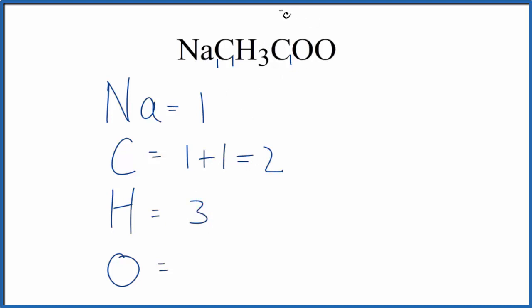Then for hydrogen we have three of those. Then oxygen we have one plus one, two oxygen atoms. If you add all of these up you get a total of eight atoms in sodium acetate.